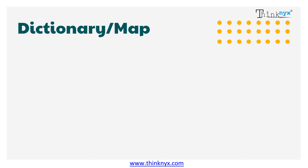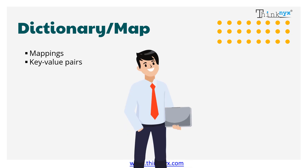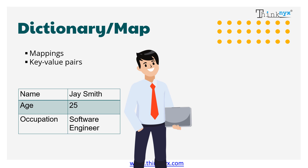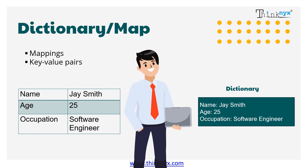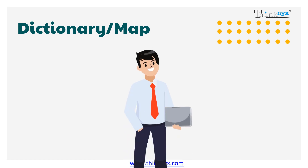Let's now talk about dictionaries. In YAML, dictionaries are represented as mappings. A mapping is a collection of key-value pairs where each key is mapped to a value. Meet Jay — he is 25 years old and is a software engineer. This information about Jay can be represented as a YAML dictionary. It has a key-value pair separated by a colon.